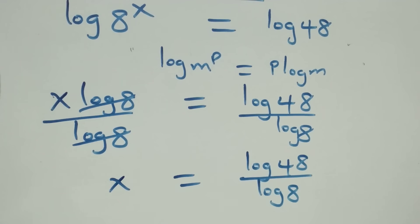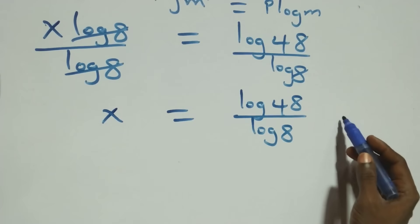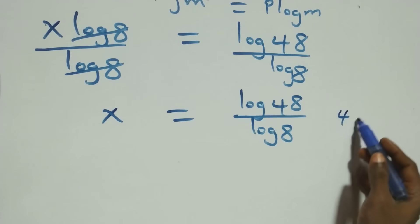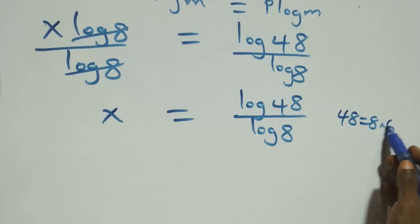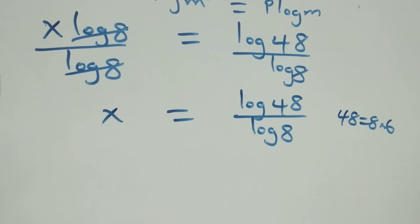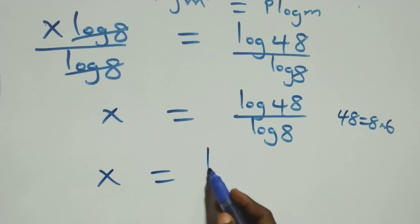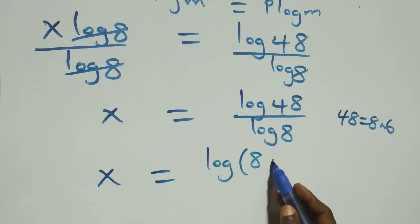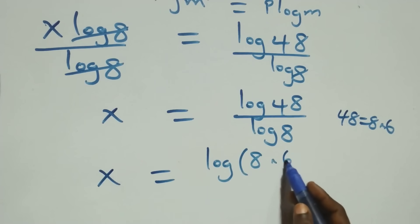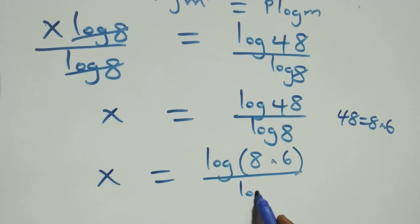The next step here, we can rewrite 48 as 8 times 6. And what we have left becomes x equals to log(8 × 6) over log 8.